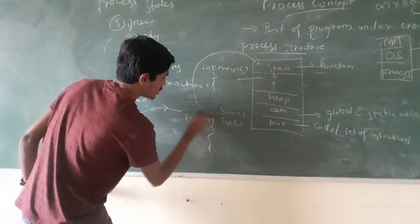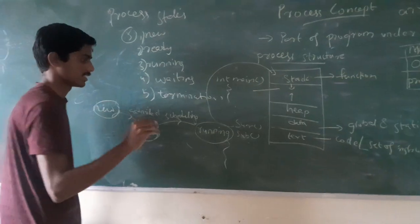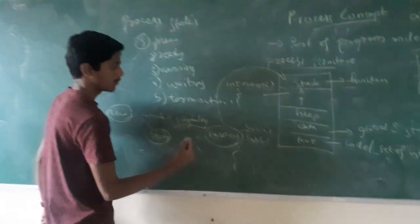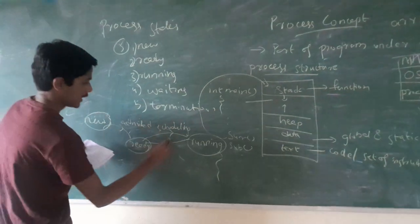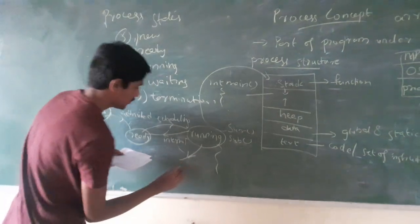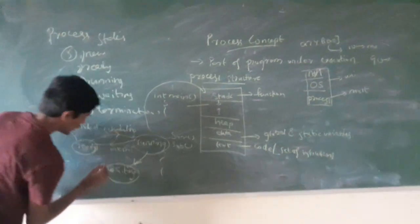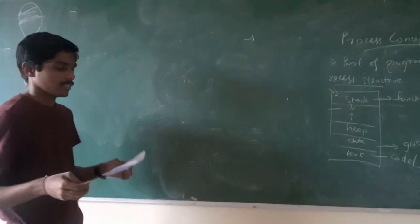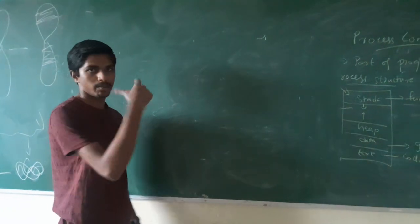The scheduler schedules the set of instructions. During execution of these instructions, if an interrupt occurs, I will draw any interrupt which can occur during the running state. Then the process comes back into the ready state. In the middle, it may be assigned to the waiting state. Then, after the interrupt is completed, it comes back to the ready state. After the process is completed, it will go into the terminated state.